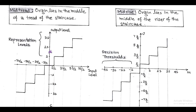Similarly, in mid-rise, origin lies in the middle of the rise of the staircase. So in this case, output level is scaled with ±S/2, ±3S/2, ±5S/2, etc. And input levels, that is called decision threshold, is marked with ±S, ±2S, etc.